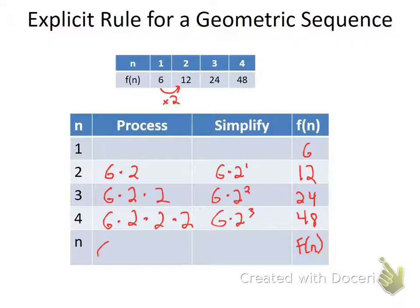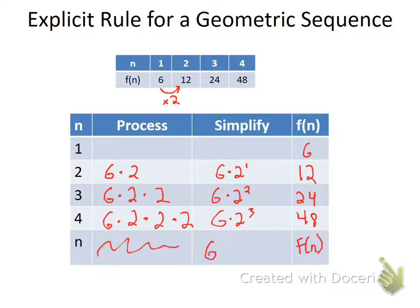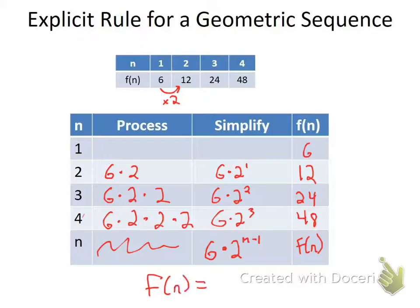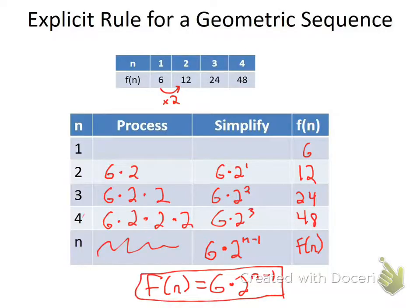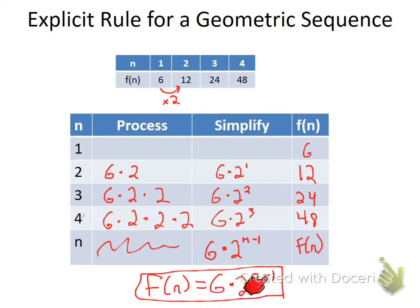Generalizing: to find the nth term, we take the first term and multiply by 2 not n times but n minus one times. So the rule is f(n) = 6 times 2 to the n minus one power. That's our rule to predict values. For the 100th term, substitute 100 for n: 100 minus 1 is 99, so the answer is 6 times 2 to the 99th power, which would be enormous.